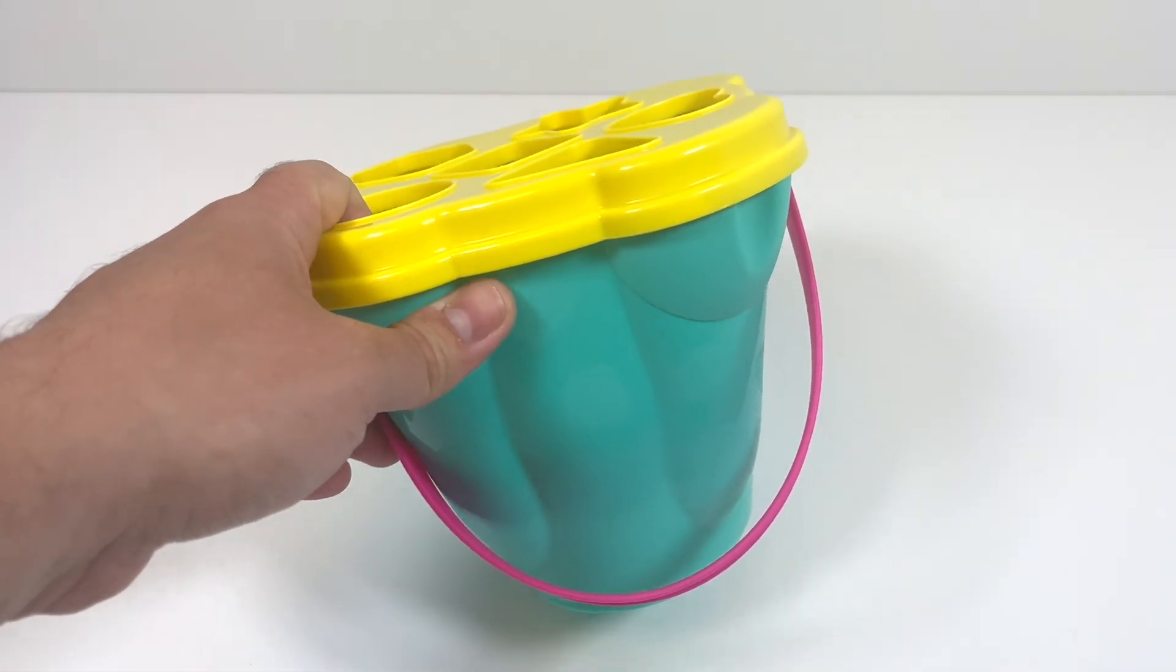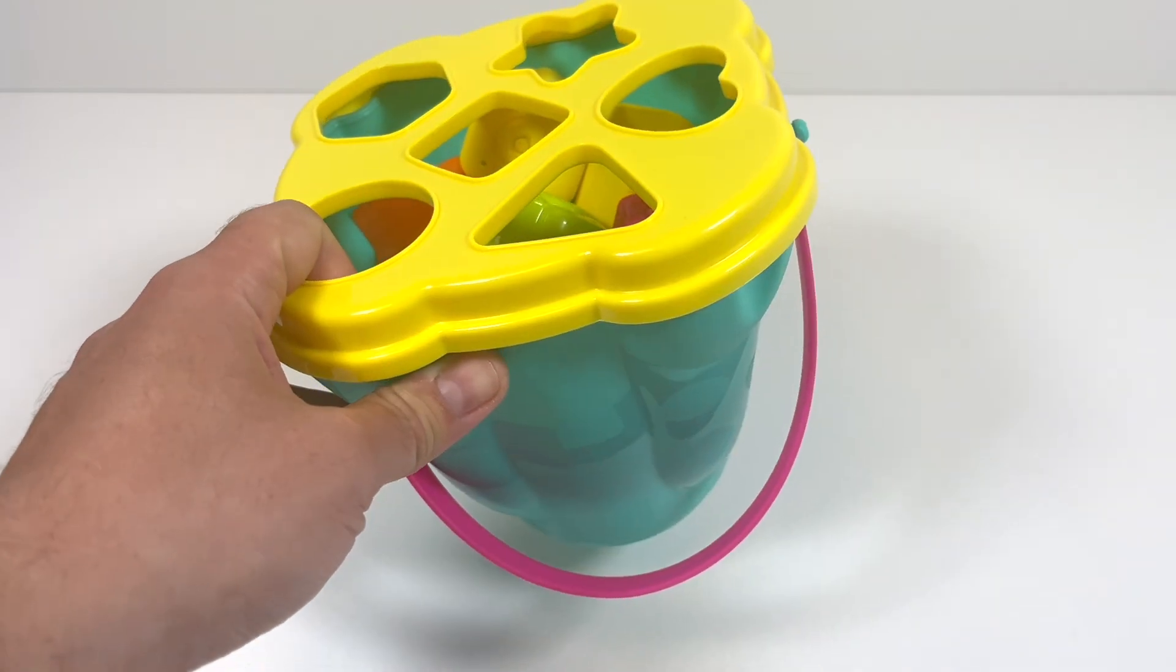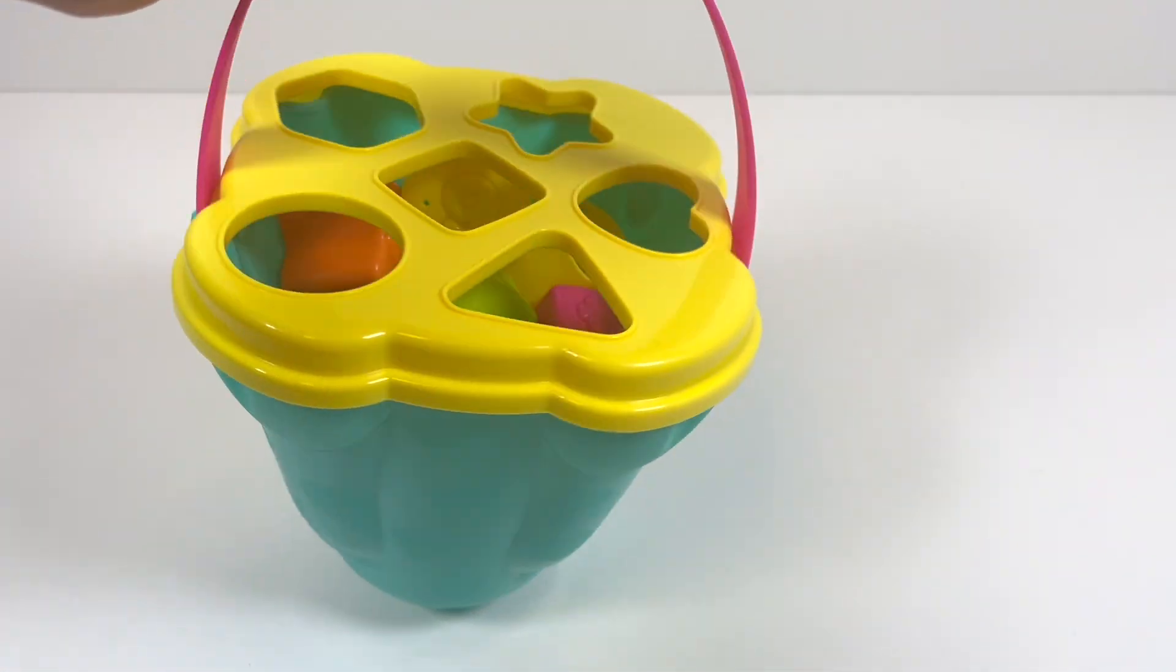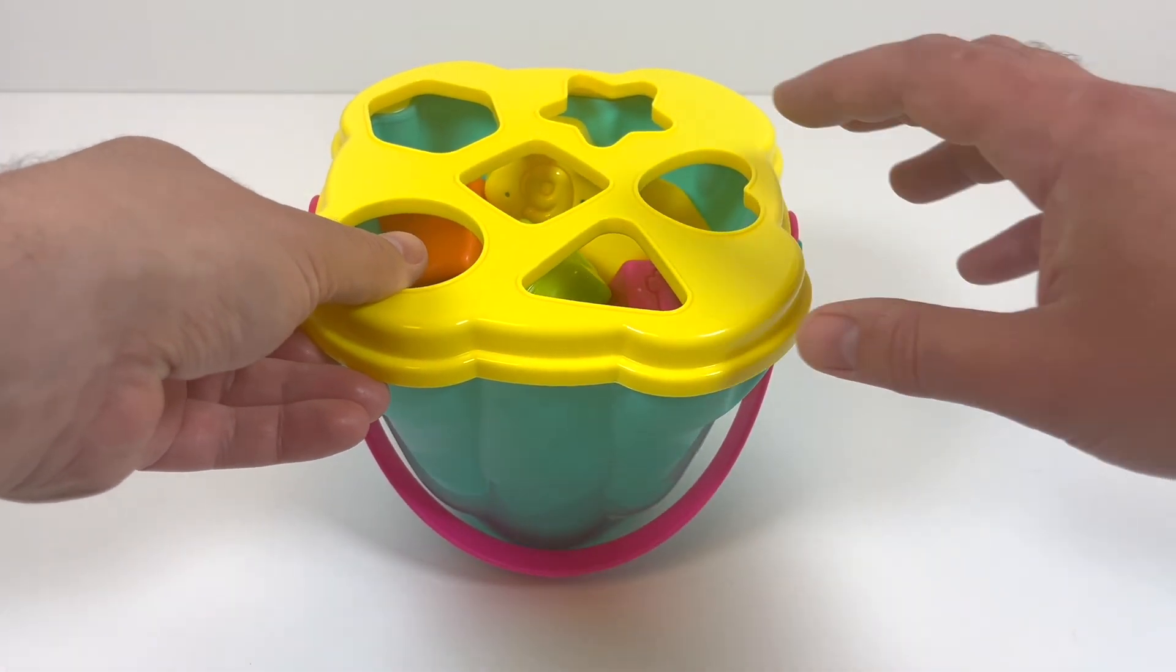Look at what we have today! It's a shape sorter by Spark. We can use this to learn shapes, numbers, and colors. Let's see what we have inside.